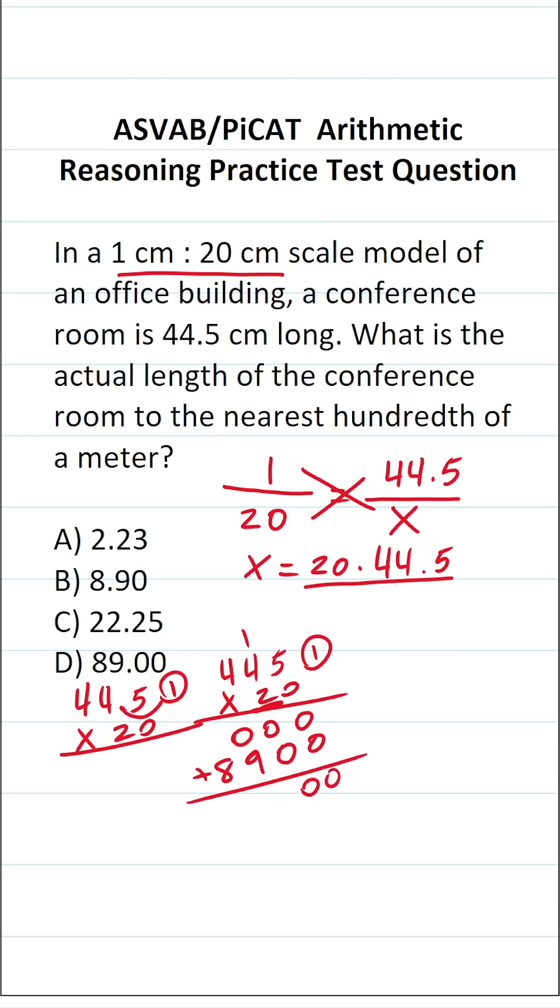This is 0, 0, 9, 8. Bring in our 1 decimal. We can see that the length of the conference room is 890 centimeters.